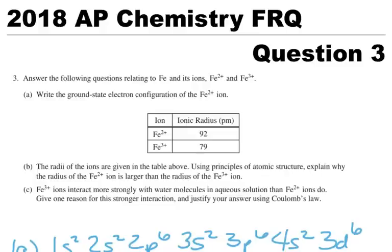I'm going to go over the answers for the 2018 AP Chemistry FRQ question number three. This is one of the long questions. So this is all about iron ions.